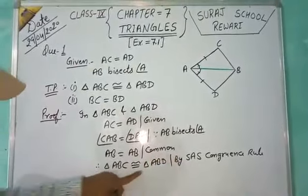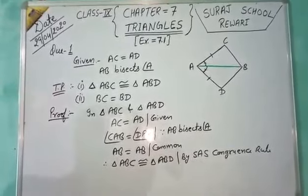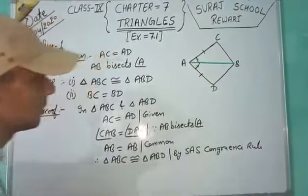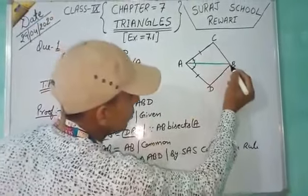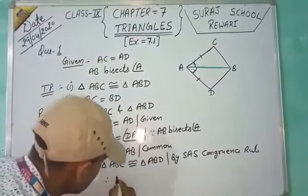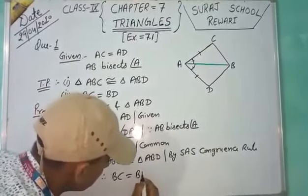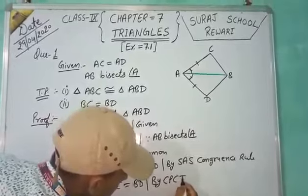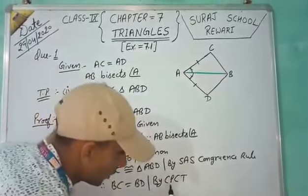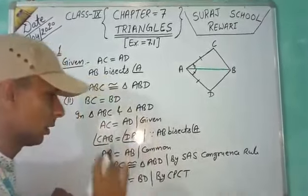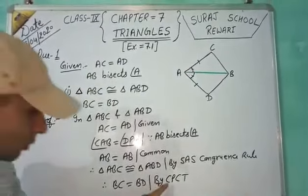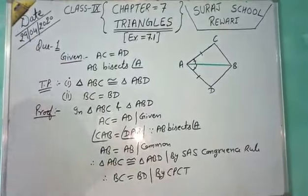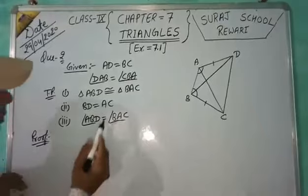And we know that if two triangles are congruent, then their corresponding parts are also equal. It means BC will be equal to BD. Therefore BC equals BD. Reason: CPCT — Corresponding Parts of Congruent Triangles are equal.